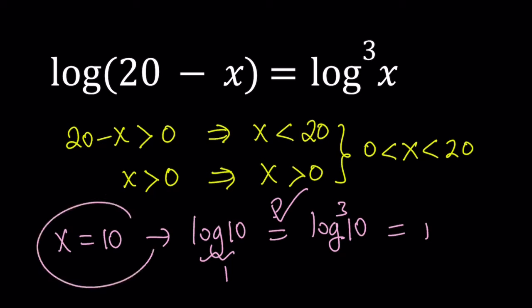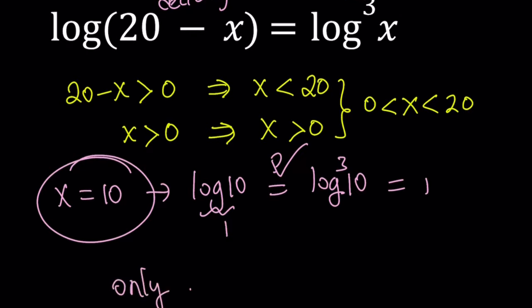That means x = 10 is a solution. But the million dollar question is: is that the only solution? Here's one thing I want you to notice. I'm also going to be showing a graph of both functions, which will give you a better idea. But notice that log(20 - x) is a decreasing function on this interval, and log³x is increasing on that interval. So we basically have a decreasing function and an increasing function that are equal. Therefore, there's only going to be one solution.